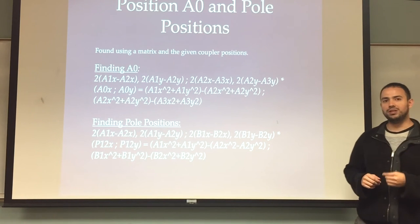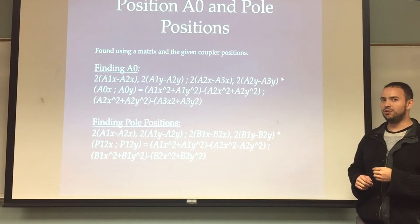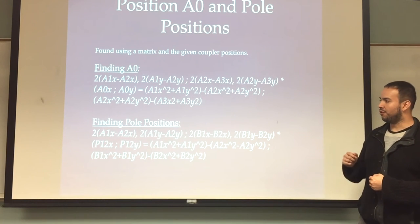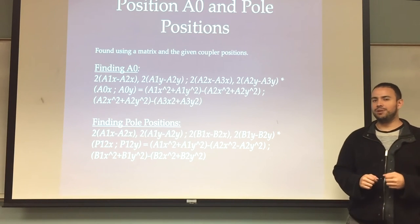The difference between that and the pole positions is that pole positions, all you need is about two points. So if you're going to find pole P1,2, that corresponds to A1, B1, and A2, B2. And vice versa for pole 1,3, you would find A1, B1, and A3, B3.